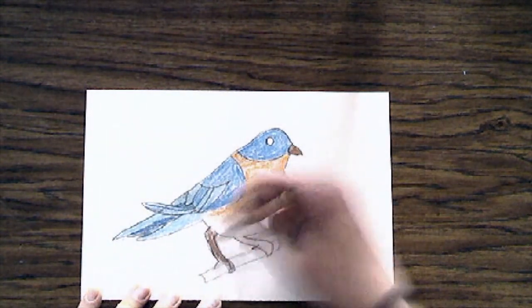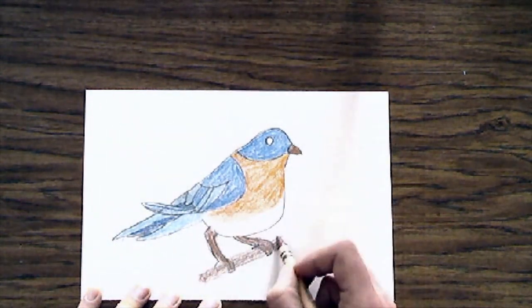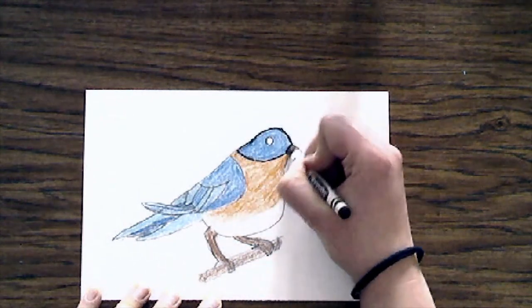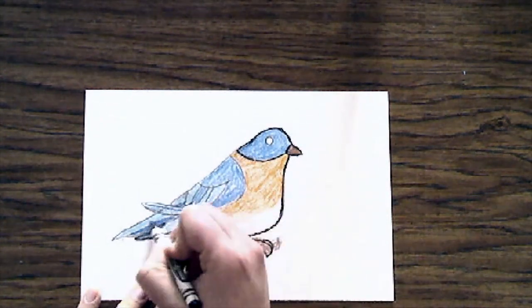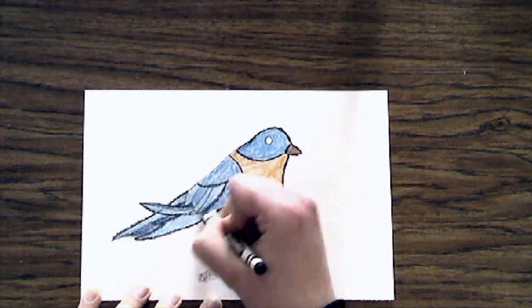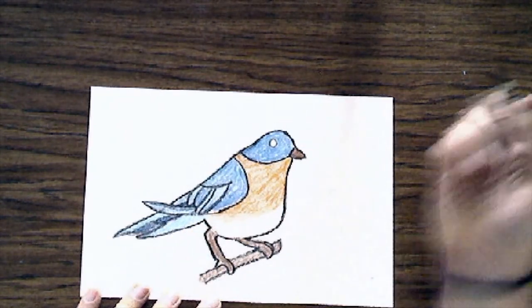I'm using a brown for the beak and the feet. I'm going to also color in my tree branch. Now, to make my blue bird really pop, I'm going to use a black crayon to outline it. And just like that, we're done coloring.